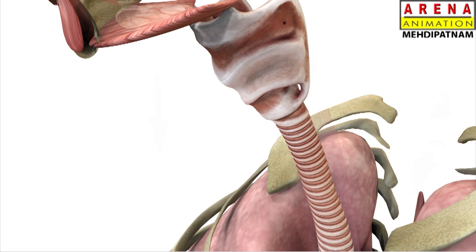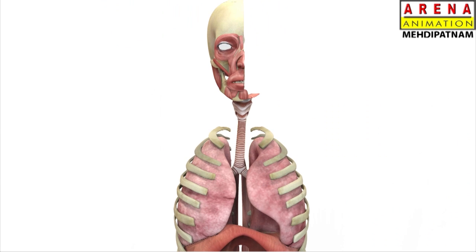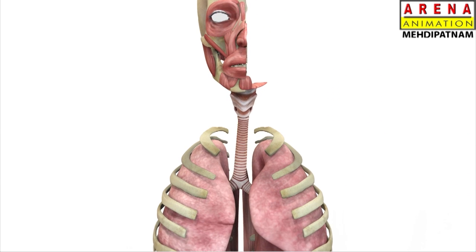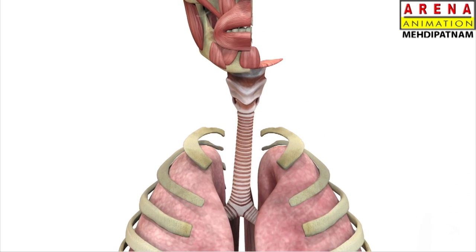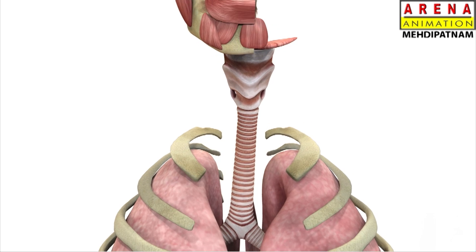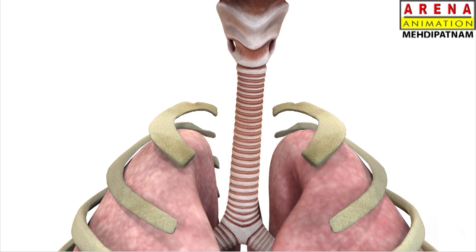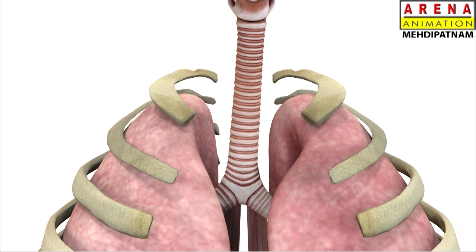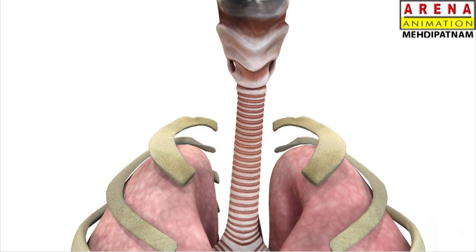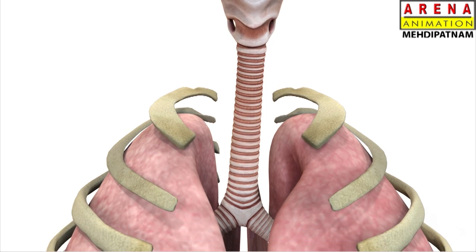The trachea is a tube that connects the pharynx and larynx to the lungs. Following the passage of air, the trachea is also called the windpipe. The trachea has a rounded structure with C-shaped tracheal rings.